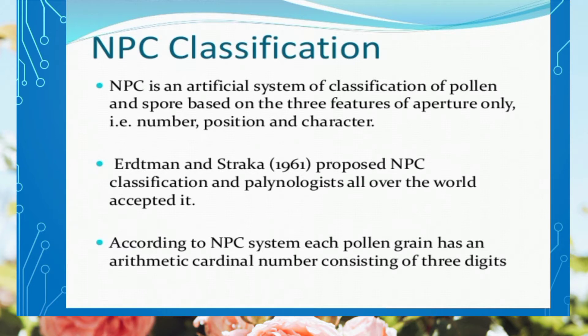According to the NPC system, each pollen grain has an arithmetic cardinal number consisting of three digits. Every pollen grain has three digits which indicate the aperture features of that grain, and these features help us to identify and classify which family or group a plant belongs to.